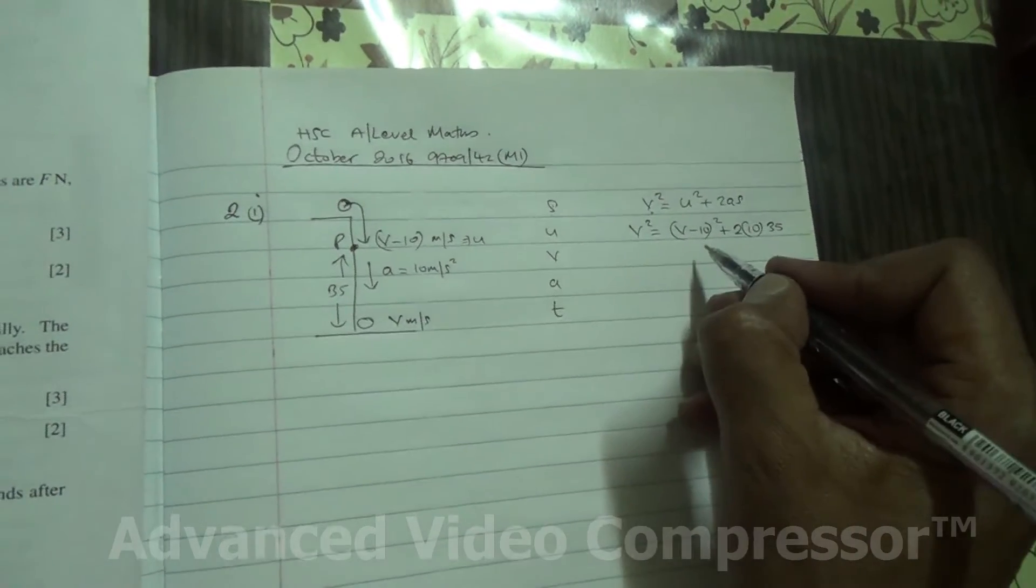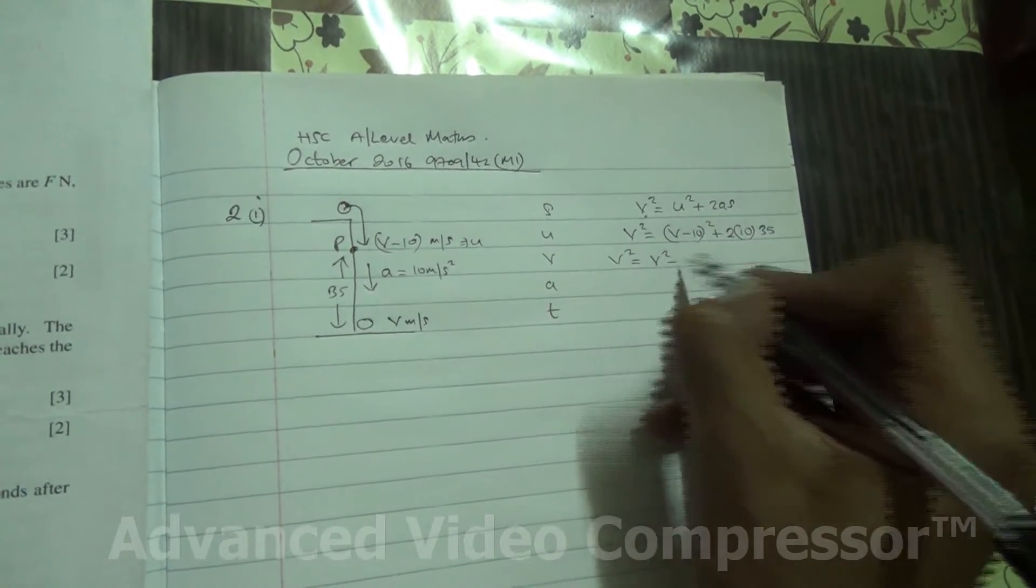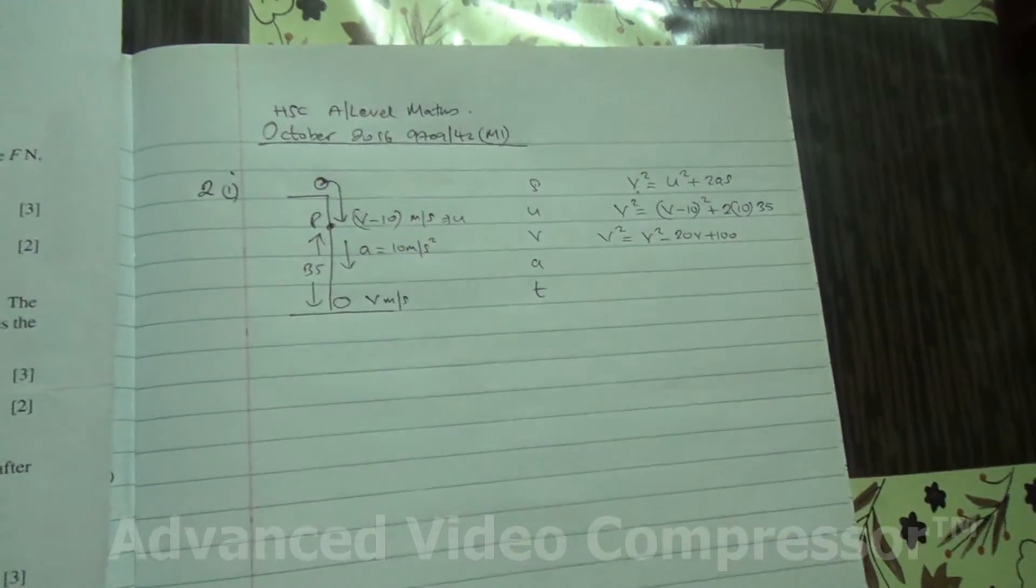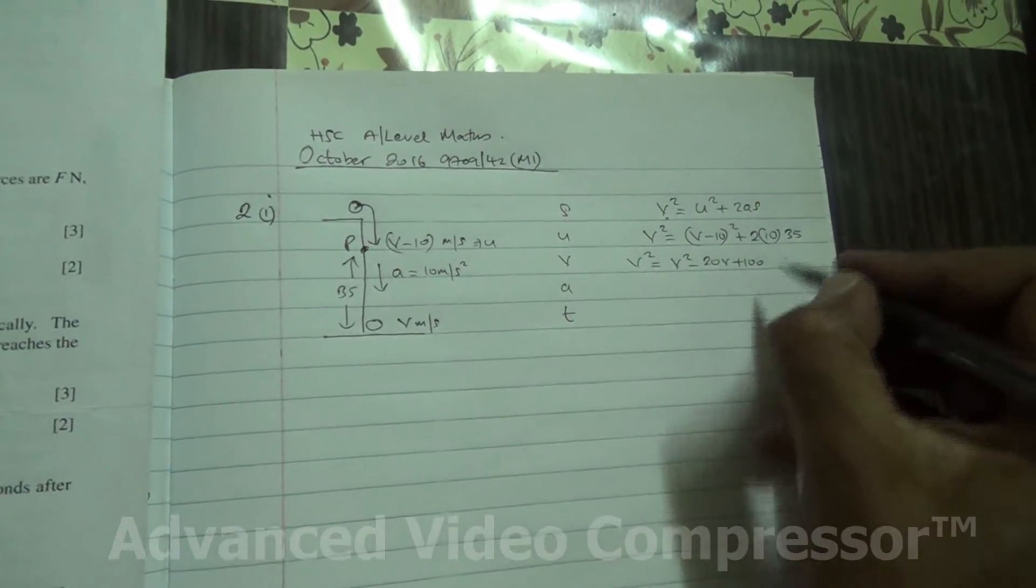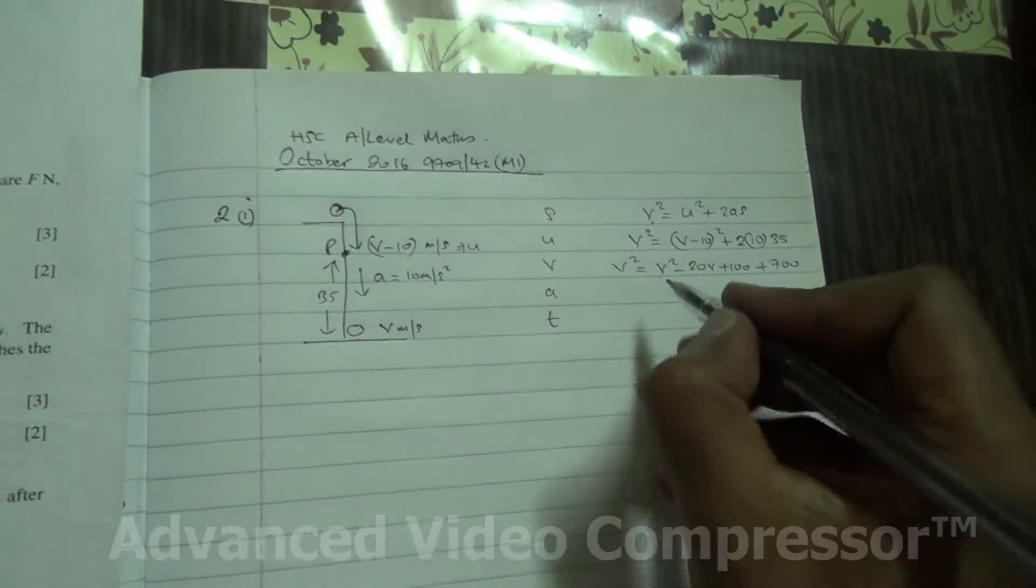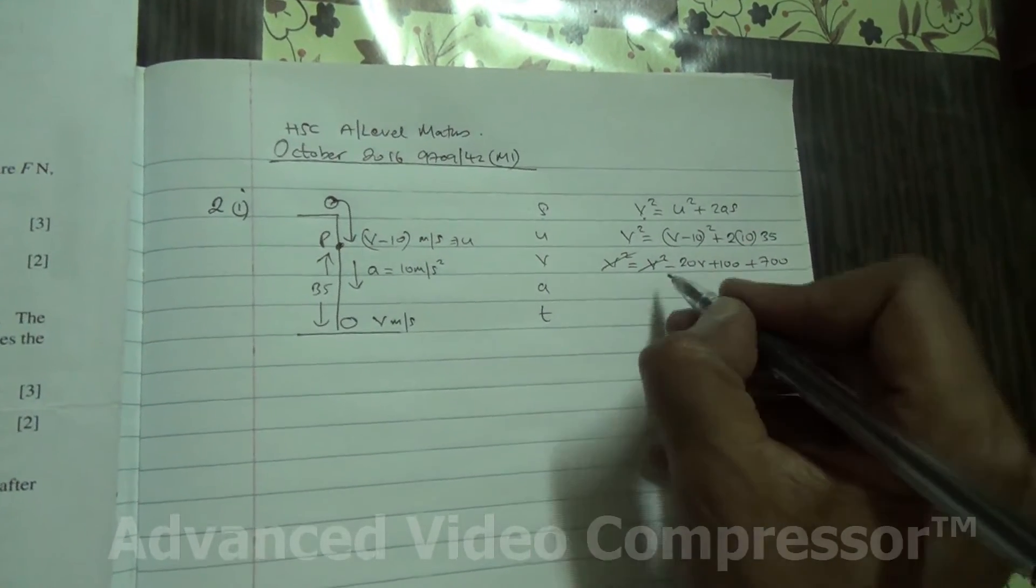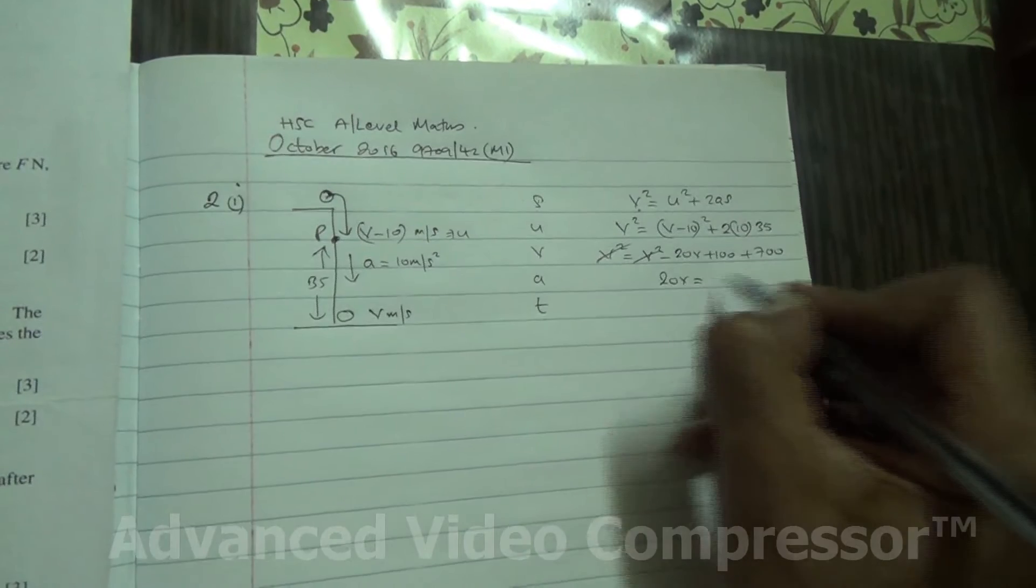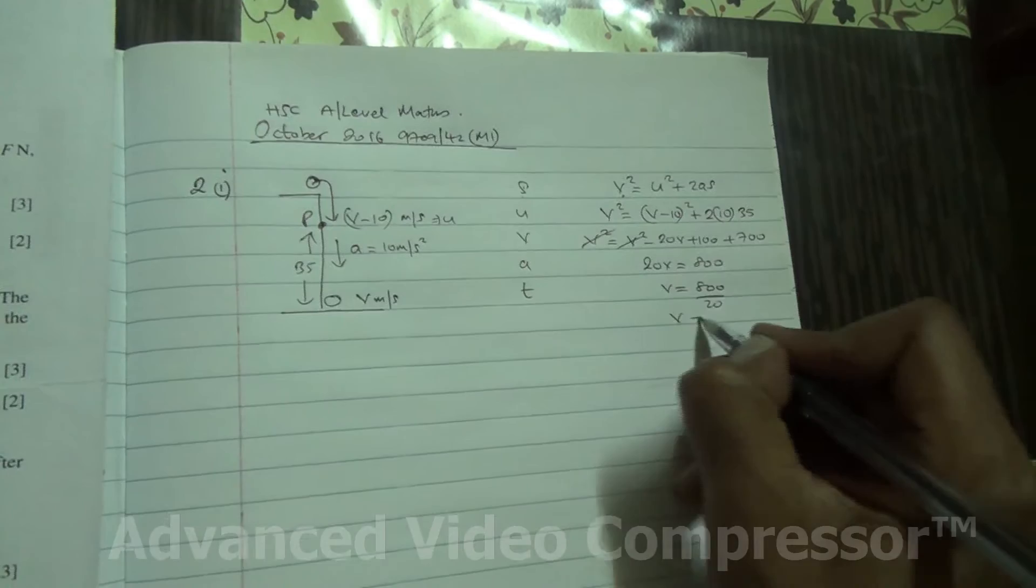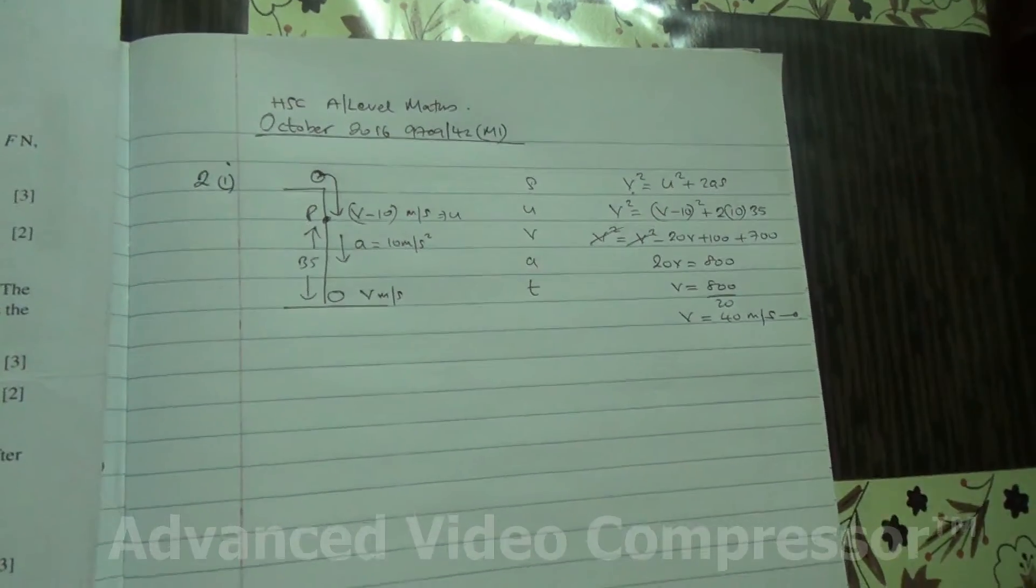Alright, so what are we going to do? We're going to try and calculate this and expand. So, v squared is equal to v squared minus 20v plus 100. And then 35 times 2 is plus 700. Alright, so we have then v squared, v squared is going to cancel out. 700 plus 100 is 800. So, 20v is equal to 800. And therefore, v is going to be 800 divided by 20. And v is going to be 40 meters per second. So, this is the first part of the question done.